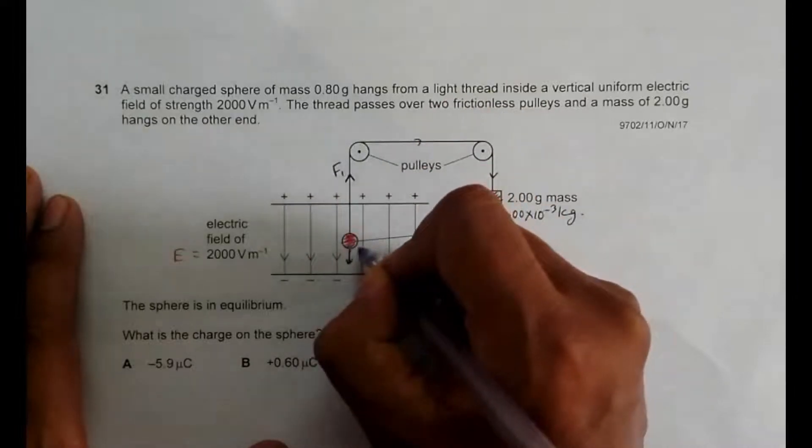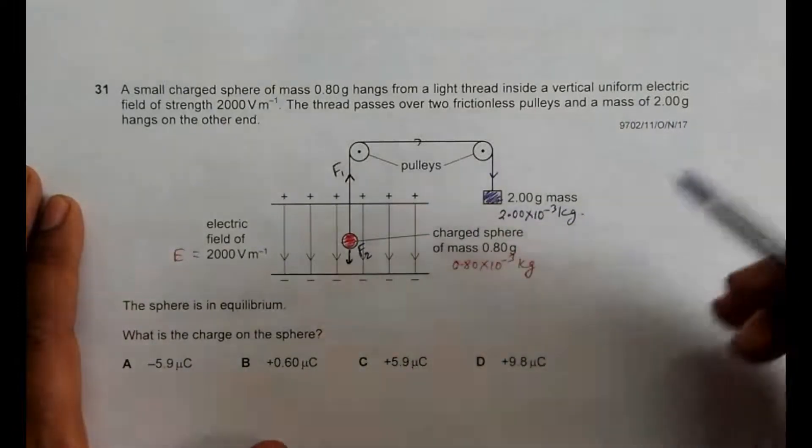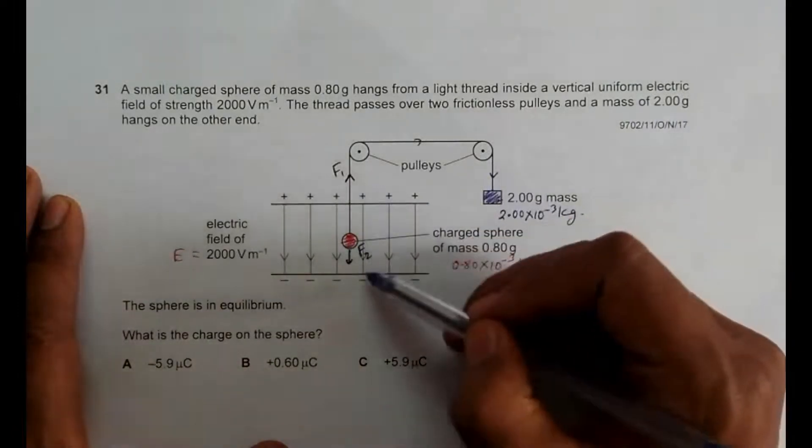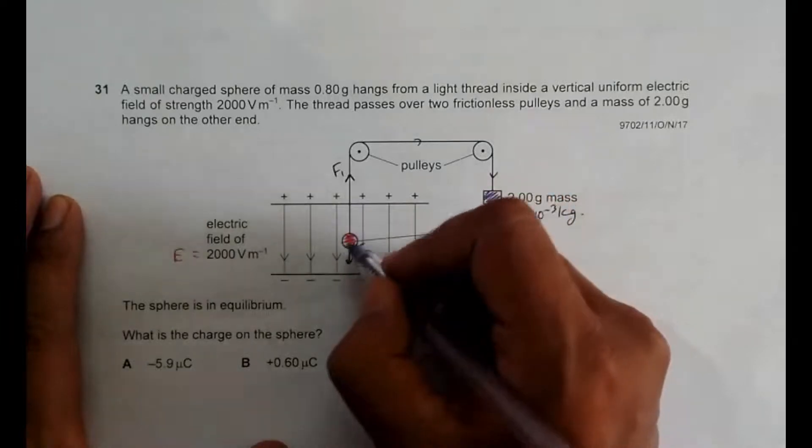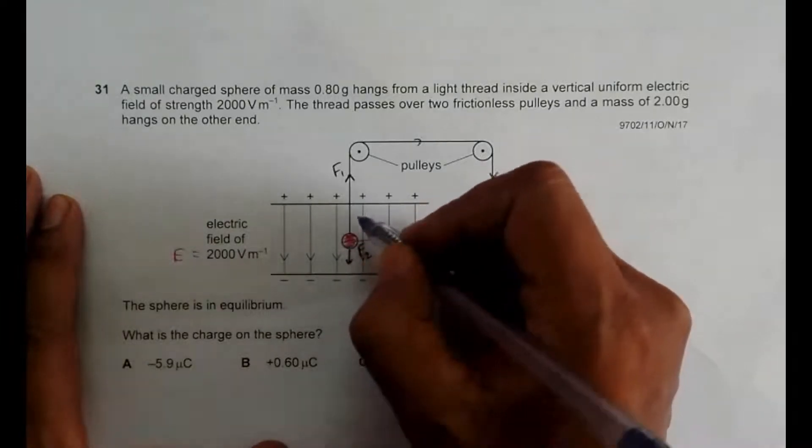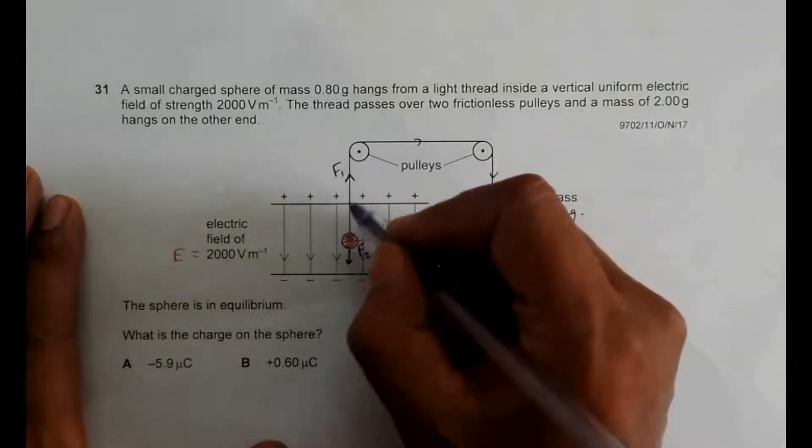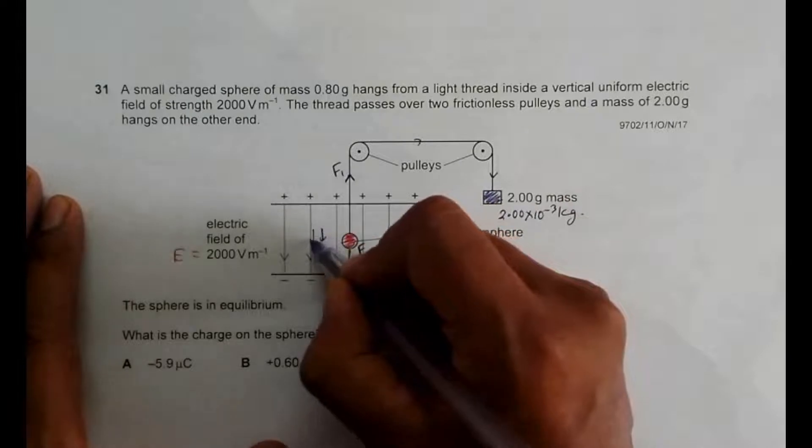F1 and this is F2. But since the system is in equilibrium, that means the electric field here should be exerting some sort of downward force on the charged sphere.